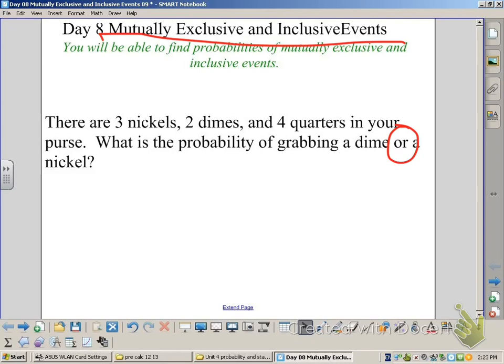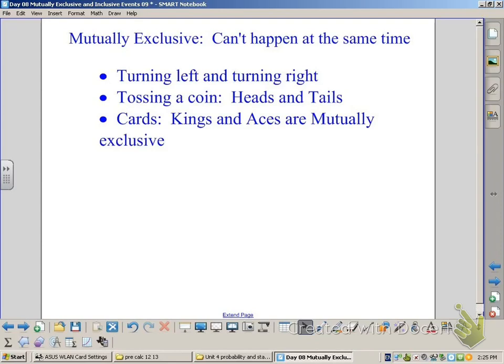Alright, we're going to now take a look at what these terms actually mean. Mutually exclusive just means that it can't happen at the same time. So listed below are a couple of examples of things that are mutually exclusive. You can't turn right and turn left at the same time. You can't toss a coin and get both heads and tails, and if you pull a card out of a deck it can't be an ace and a king. They cannot happen at the same time.